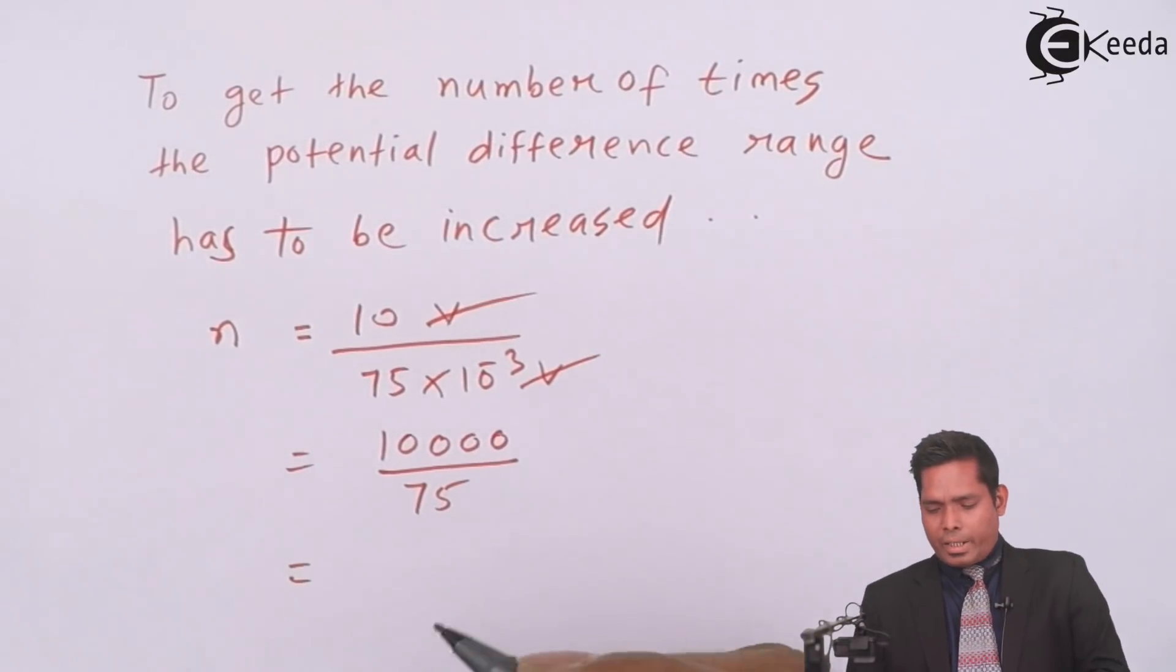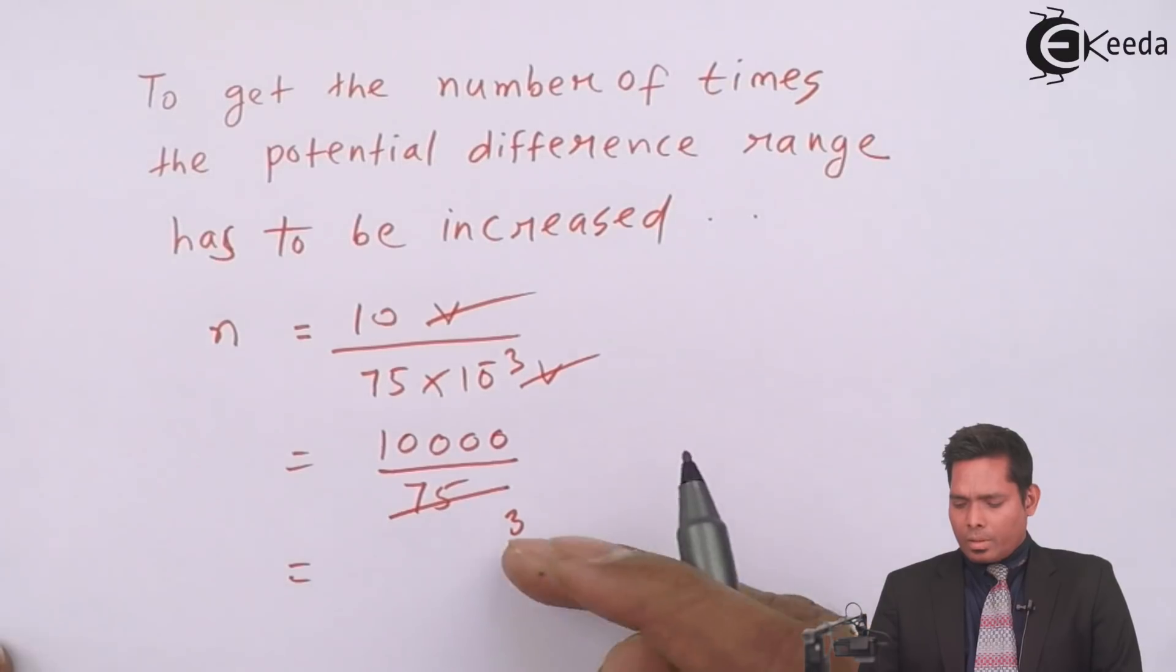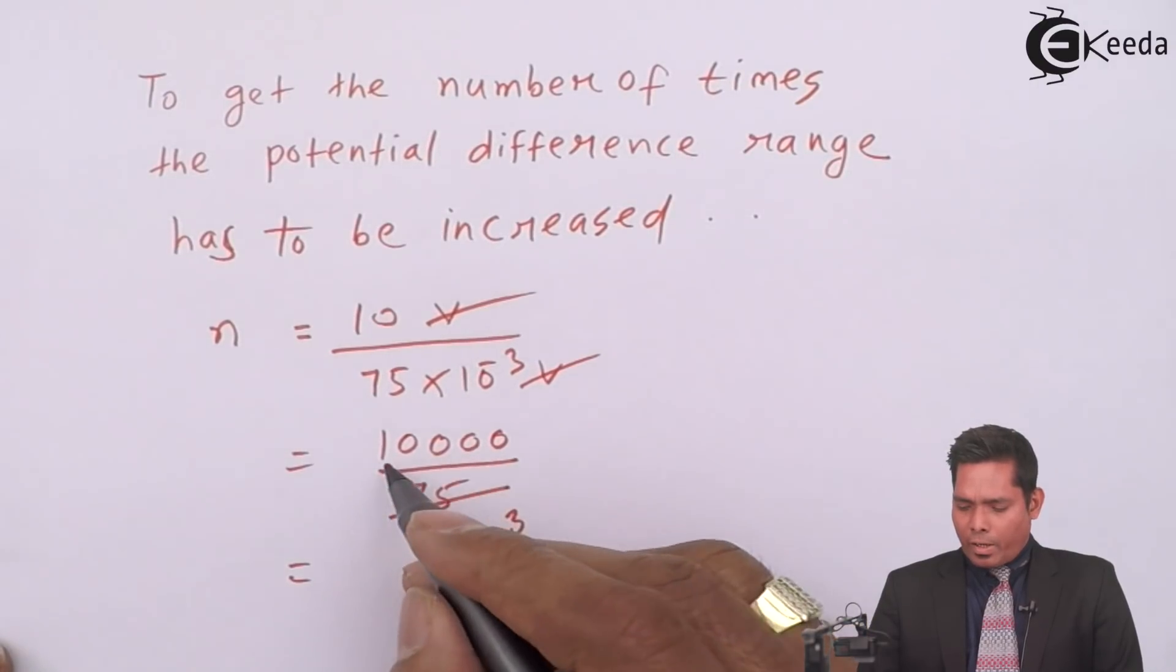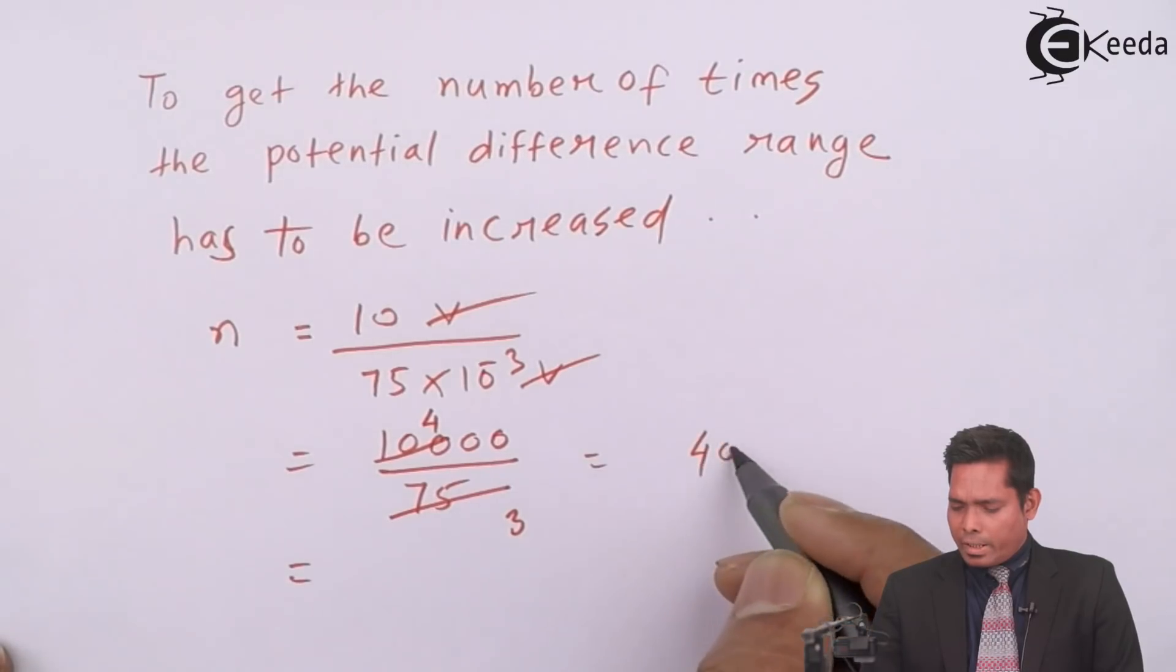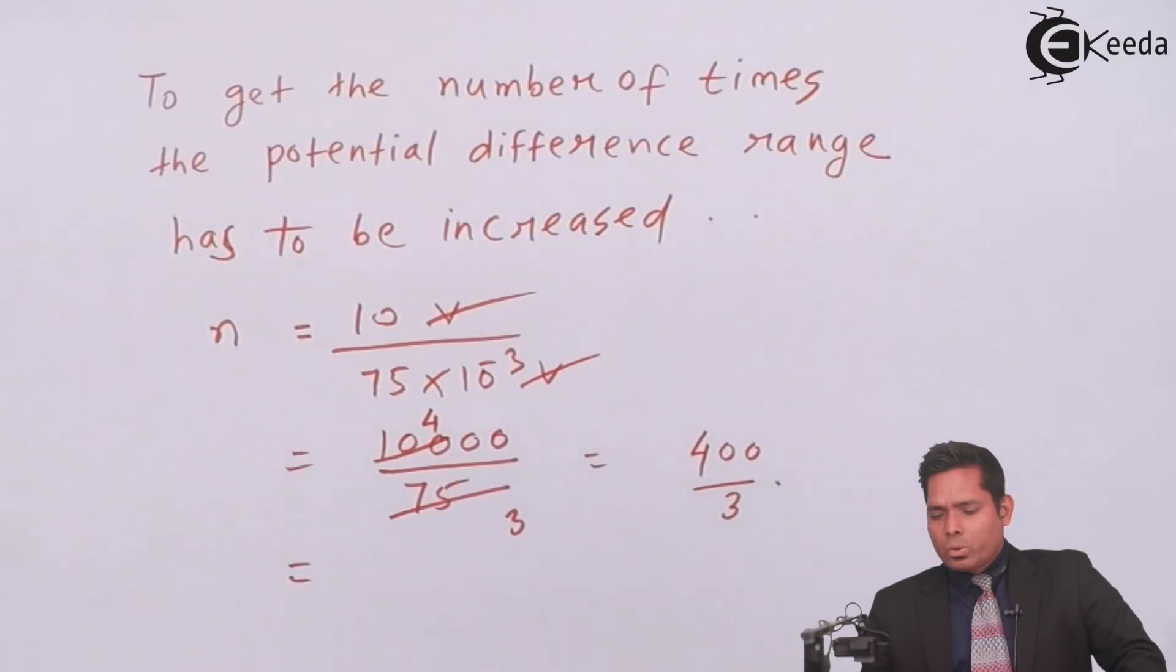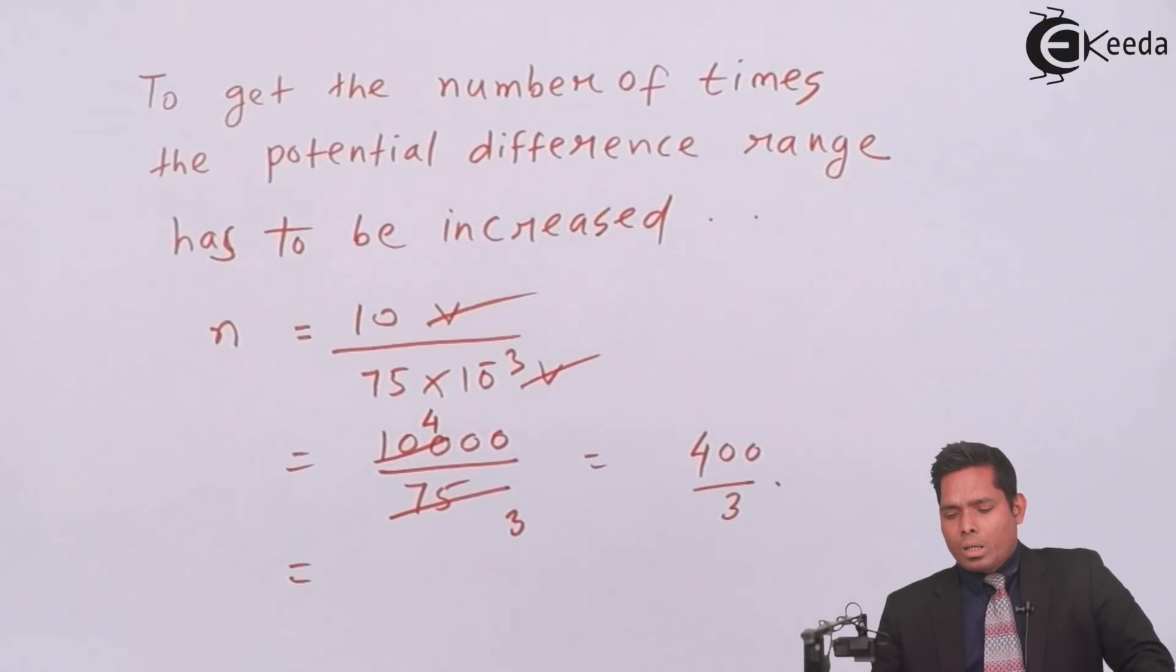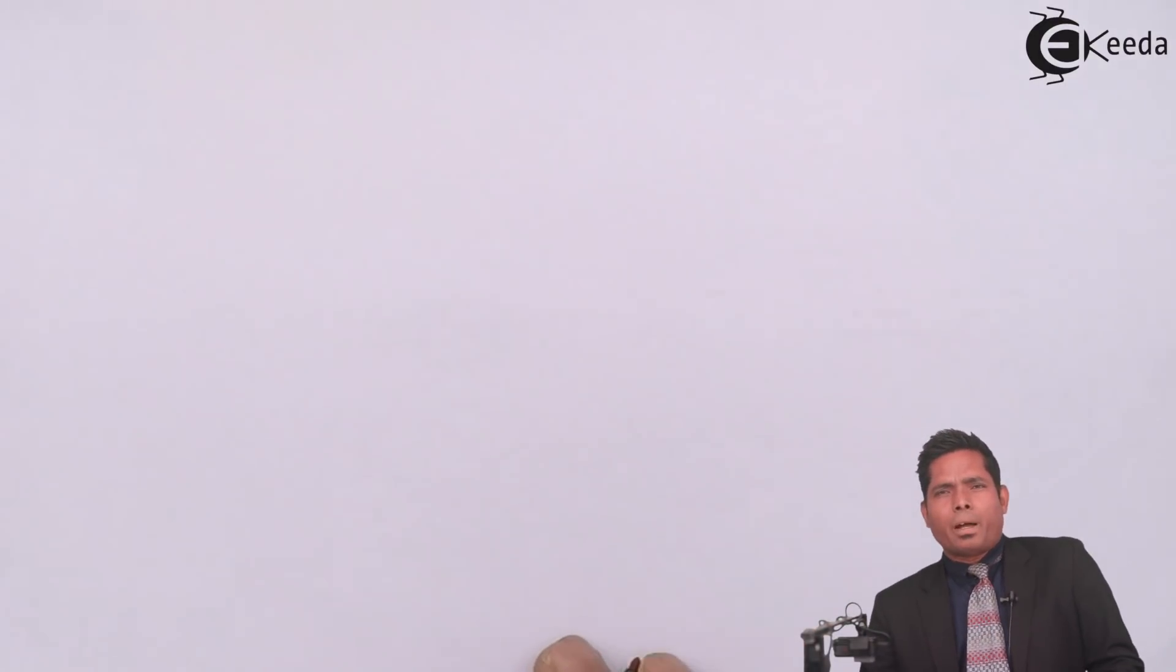If I calculate, 25 times 3 is 75, 25 times 4 is 100. So this is 400 divided by 3. This is the number of times I am going to increase the potential. Now the range would be 400 by 3 times.